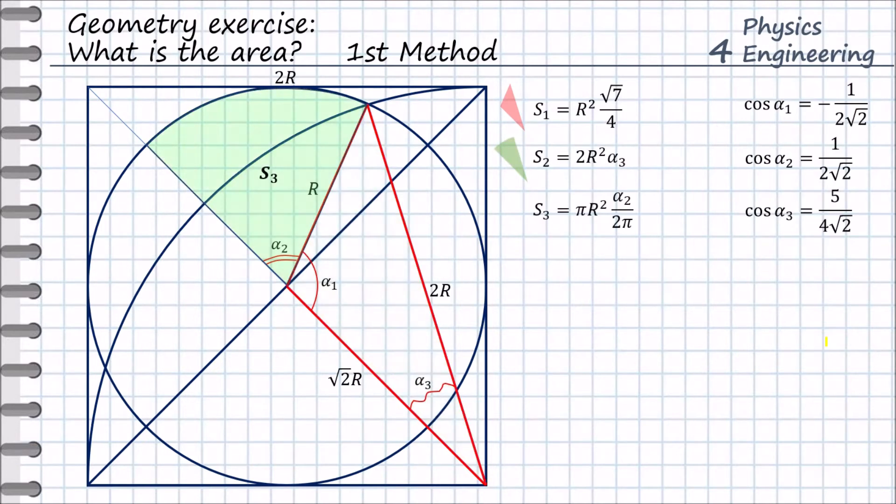As a third step we will find the area of this following sector. Let us call it s3. This is part of the small circle. We use alpha2 angle to find this area.